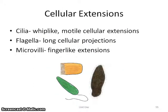There are three different types of cellular extensions: sometimes there's cilia, sometimes there's a flagella, and microvilli. Each one of those has a different use, and we'll get into that more in class.